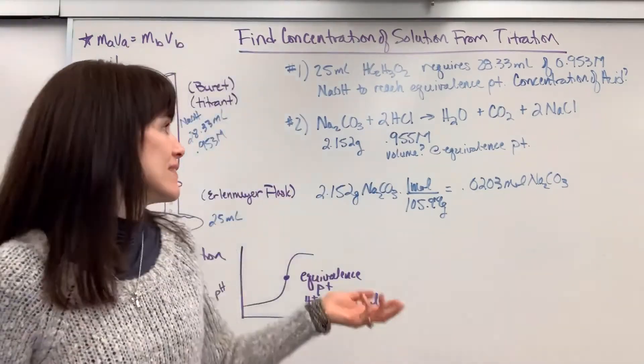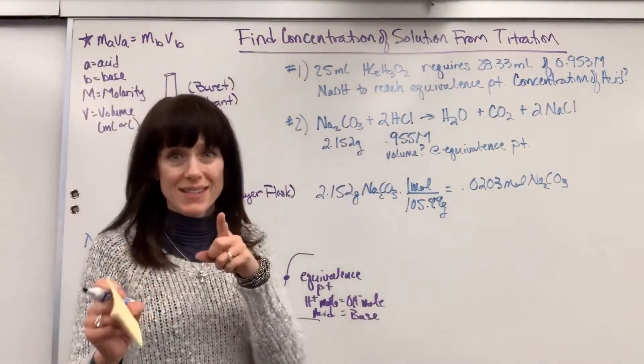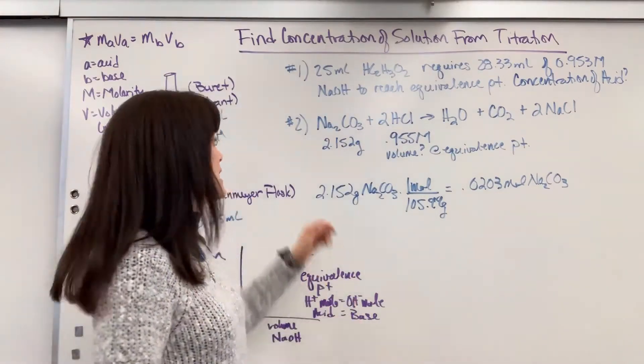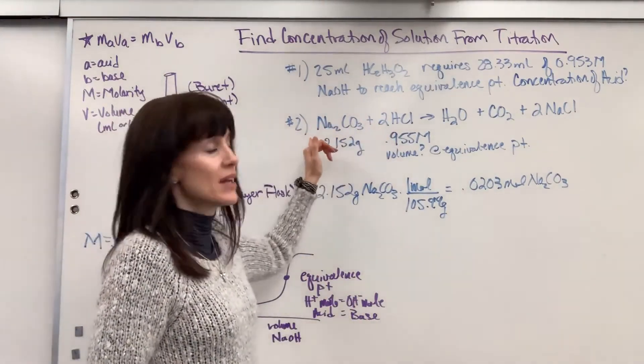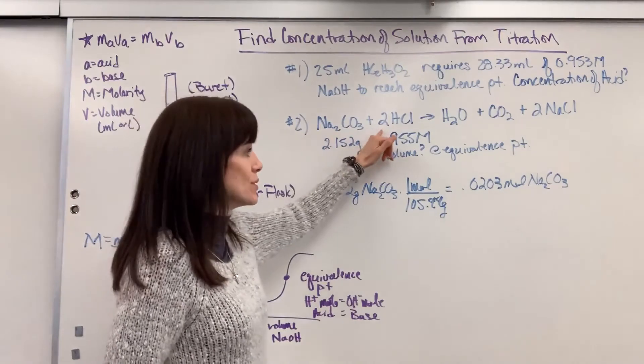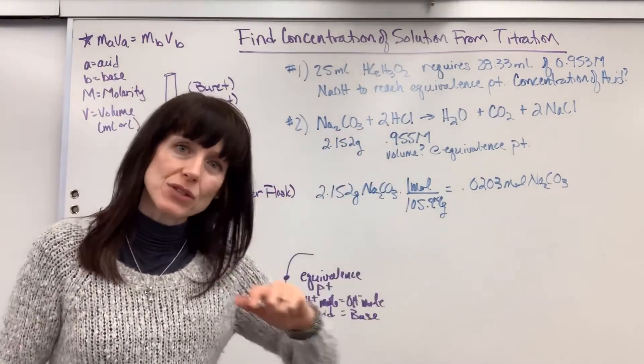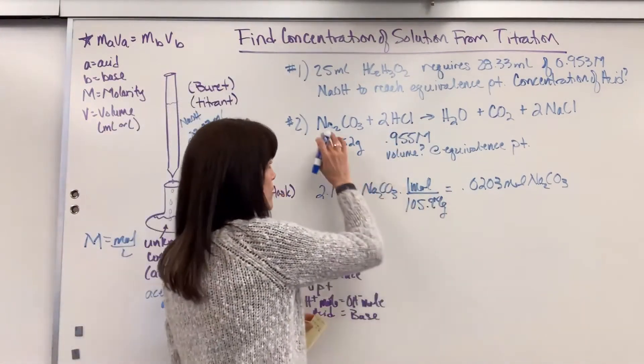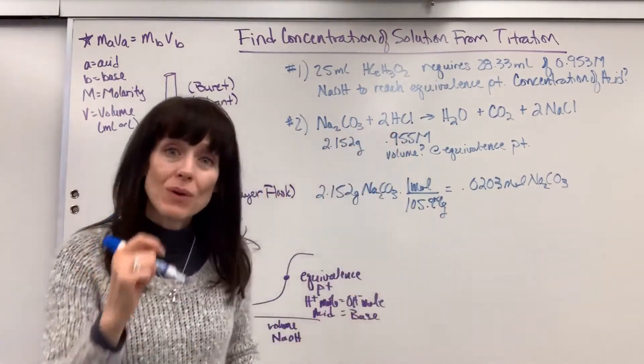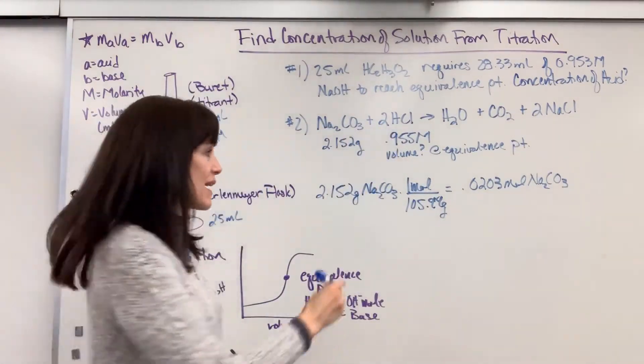So I found the moles of the sodium carbonate. And now I ask, well, how many moles reacted of the HCl? Notice, and I was purposeful in picking this, it's not a one-to-one. This is actually a one-to-two. So watch. We have to do this little stoichiometry, the little bridge, to go from sodium carbonate to find the moles of the hydrochloric acid.